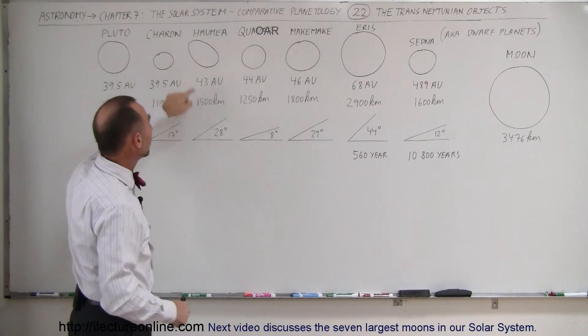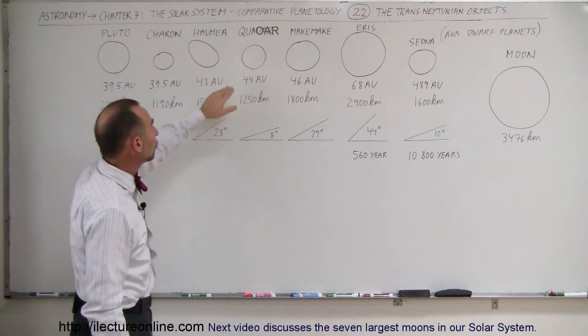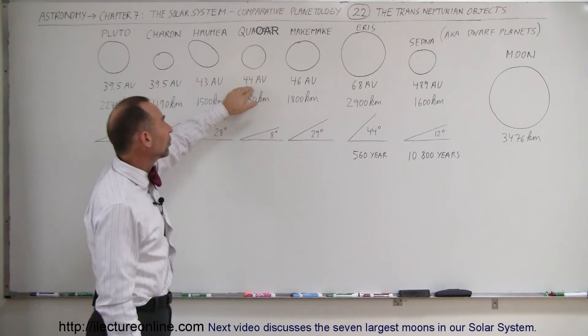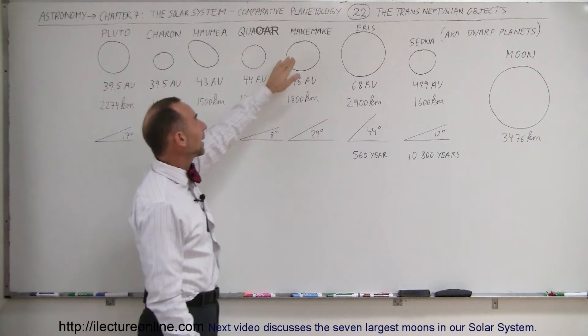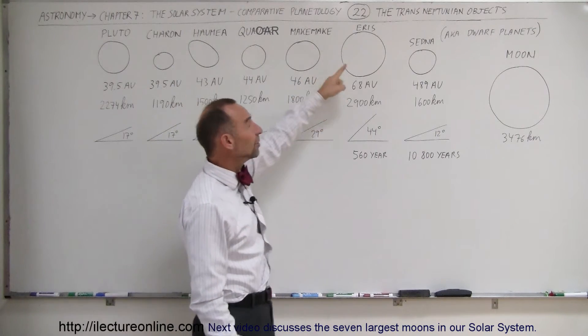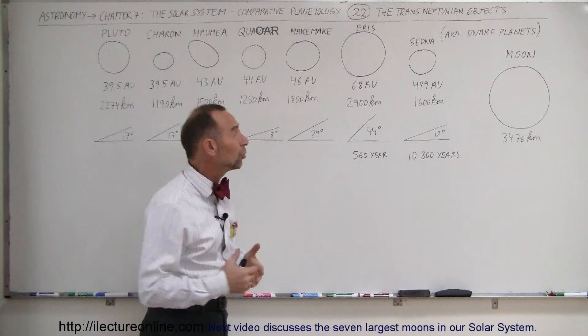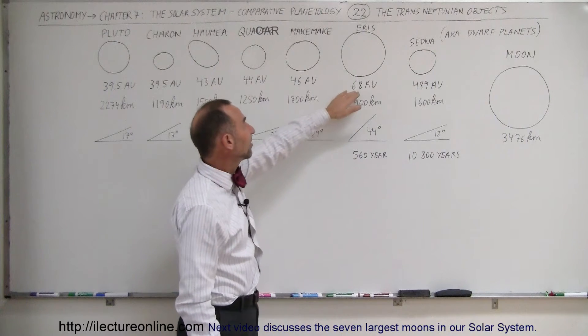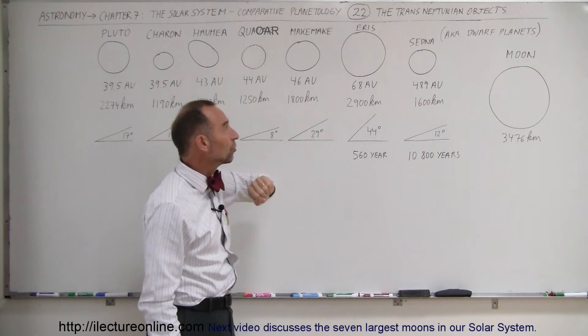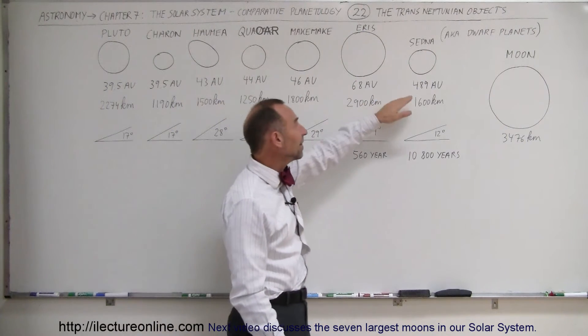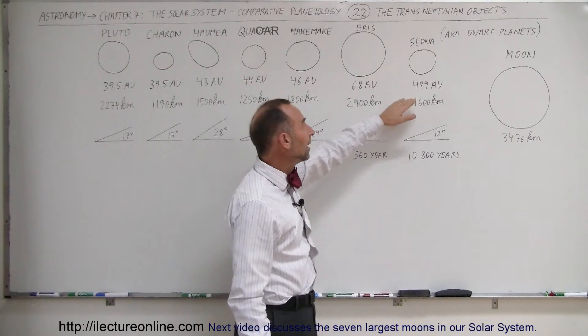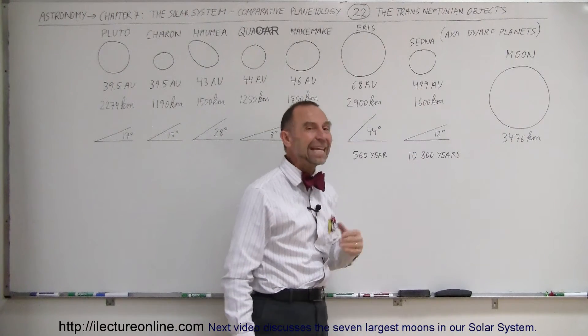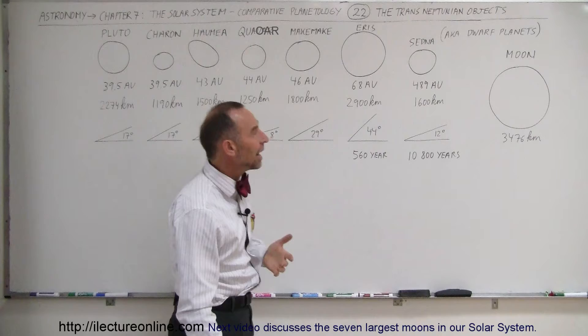We have Haumea, which is at 43 astronomical units. Quaoar, which is slightly further, 44 astronomical units. Makemake at 46 astronomical units. And Eris, the biggest of the trans-Neptunian objects, at 68 astronomical units. And then there's one called Sedna, which has a very elliptical orbit that's as far away as 489 astronomical units on average.